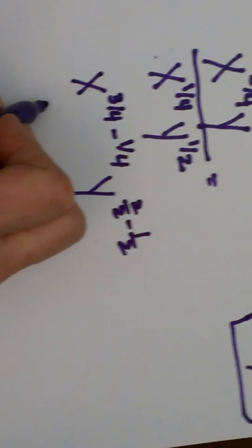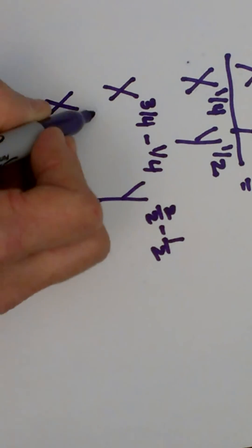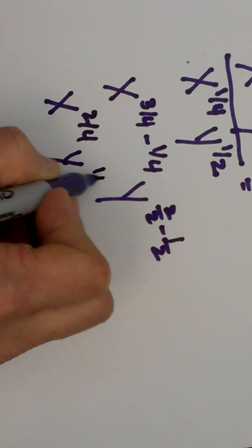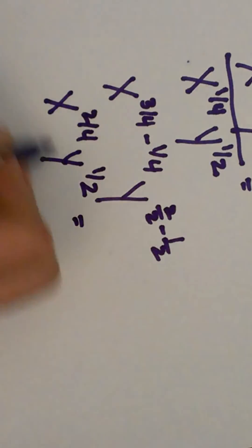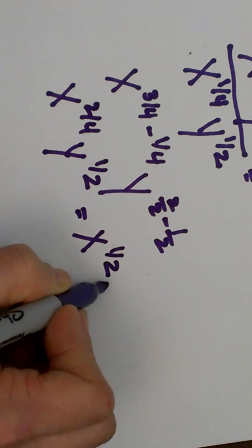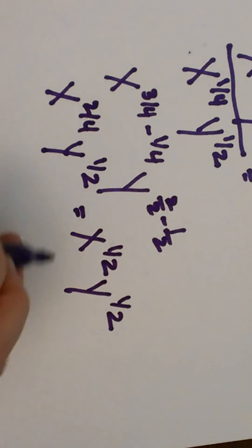That simplifies to x to the 2/4, y to the 1/2, and again that reduces one more time, that is x to the 1/2, y to the 1/2, and you can leave it like that.